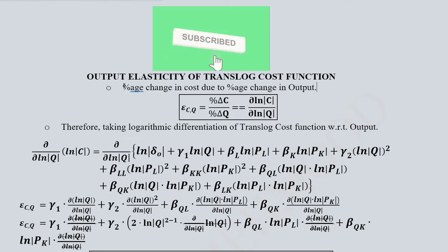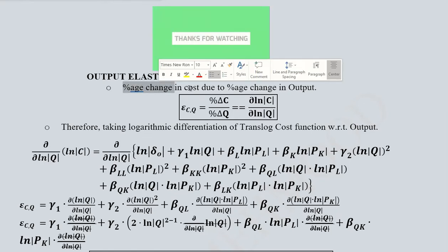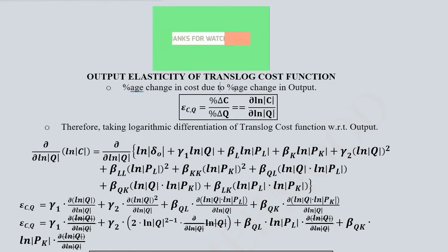The output elasticity of cost function is basically the percentage change in cost that gets caused due to the percentage change in output. So this is the formula that we can develop from this definition.